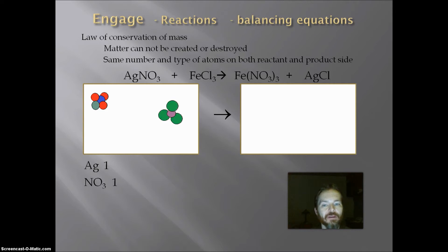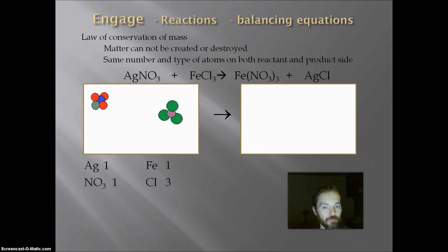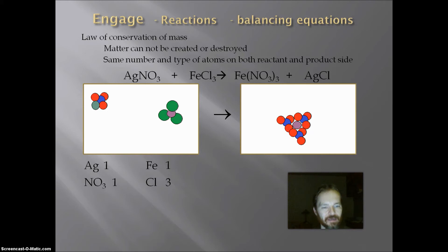The other thing on the reactant side is my FeCl3. The bright green chlorine — there are three of them — and the purplish iron. So there is one iron and there are three chlorines. If I go to the product side, I have the Fe(NO3)3. That is a cluster with one iron, the purplish thing in the center, and three NO3s around it. So I have one iron and three NO3s.